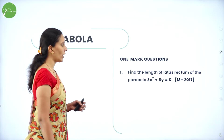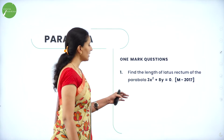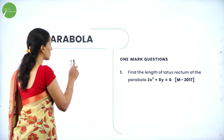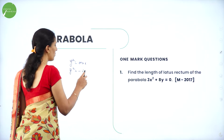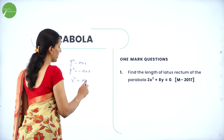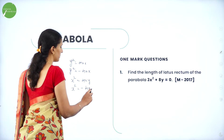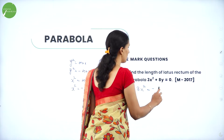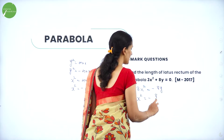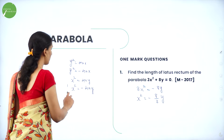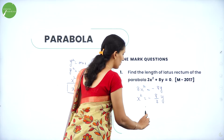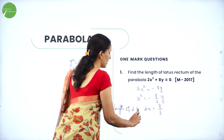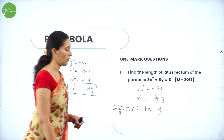One-mark question: Find the length of the latus rectum of the parabola 3x² + 8y = 0. We write this in standard form. The four standard equations are y²=4Ax, y²=−4Ax, x²=4Ay, and x²=−4Ay. Here we get x² = −8/3 y, which is clearly of type four — the downward parabola. So 4A = 8/3, and since the length of the latus rectum is 4A, the answer is 8/3.